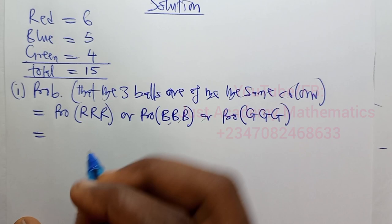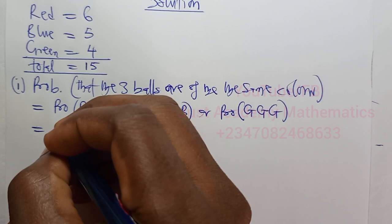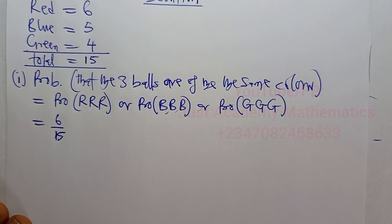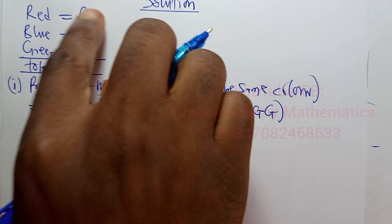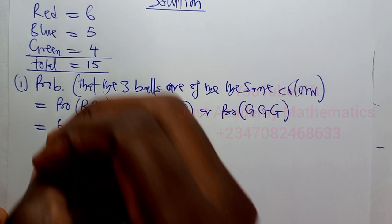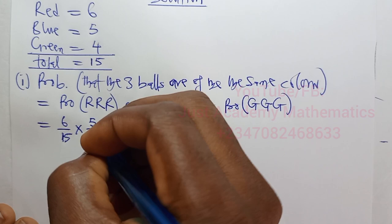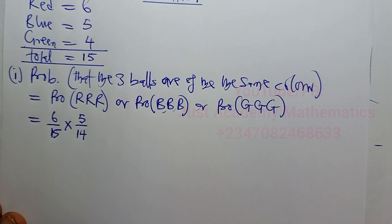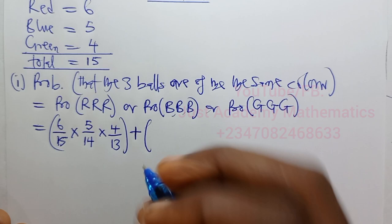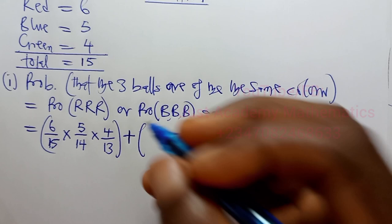Or the probability that the first is green, second is green, third is green. Let's work it out. Probability that the first is red: 6 over 15. Since it's without replacement, if you remove one red ball, how many red are remaining? Five. So the second draw is 5 over 14. Then for the third draw, red remaining is four, so that's 4 over 13. For blue: the first is 5 over 15.